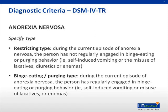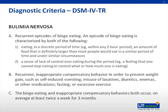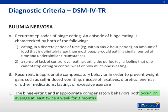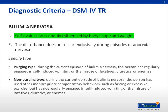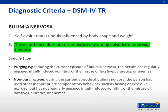Bulimia nervosa. The DSM-IV criteria lists five key features of BN: recurrent binge eating episodes, which are followed by inappropriate compensatory behaviors that occur at least twice a week over a period of three months. The individual's self-evaluation is unduly influenced by body shape and weight, and this disturbance does not occur exclusively during episodes of anorexia nervosa.